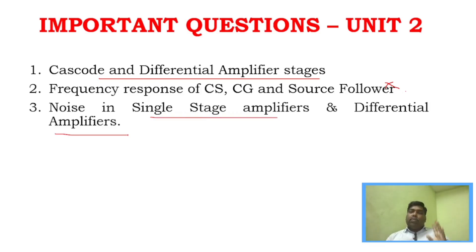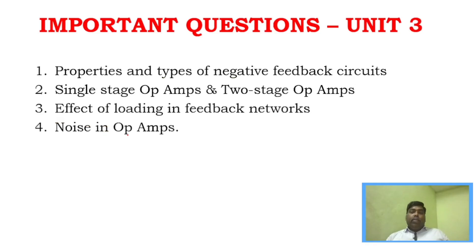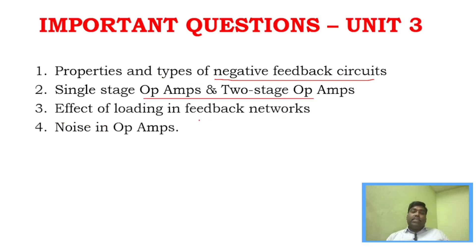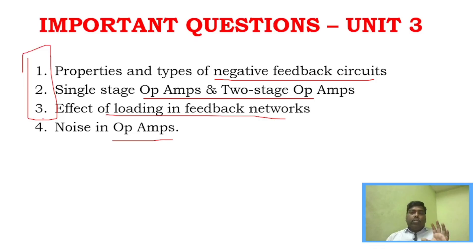For Unit 3, from four questions study: types of negative feedback networks, single-stage and two-stage operational amplifiers, effect of loading in feedback networks, and noise in operational amplifiers. At least three of these four questions are sure-shot topics. For the fourth question, just go through it once.